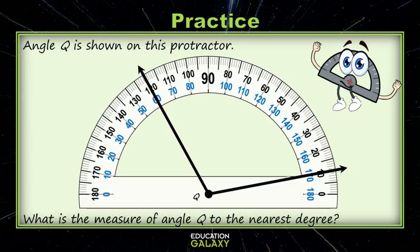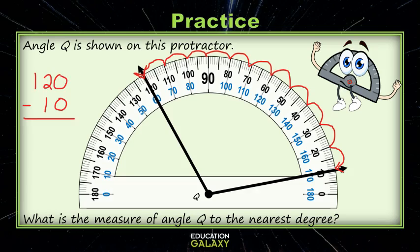Okay, I think you're ready for a tricky one now. Angle q is shown on this protractor. What is the measure of angle q to the nearest degree? Since neither ray is lined up with either of the zeros on the protractor, we need to count the degrees between the two rays. If you look to the outside scale, I see that one ray is pointing to 120 degrees and one is pointing to 10 degrees. So we need to subtract to find the degrees between the two rays. 120 minus 10 equals 110. So my answer is 110 degrees.